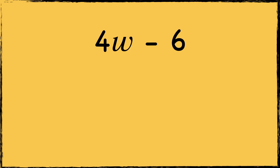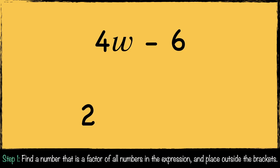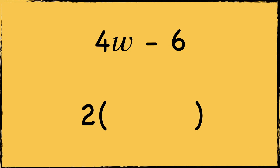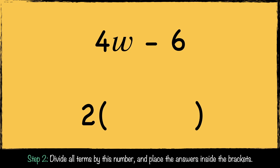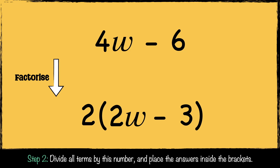Here's the next example: 4w − 6. We need to find a factor of the terms in this expression. 2 is a factor of both 4 and 6, so we put 2 in front of the brackets. Now we divide our terms by 2: 4w divided by 2 is 2w, and −6 divided by 2 is −3. So this expression can be factorized to 2(2w − 3).